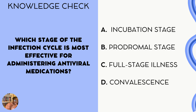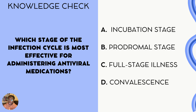Next knowledge check. Which stage of the infection is most effective for administering antiviral medications? A, the incubation stage. B, the prodromal stage. C, the full-stage illness. Or D, convalescence. Take a moment, pause, and answer the question. The correct answer is B, the prodromal phase. Antivirals are the most effective during the prodromal phase when symptoms have just started to appear.